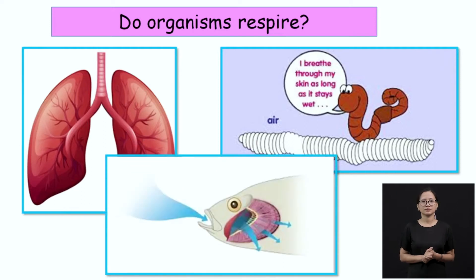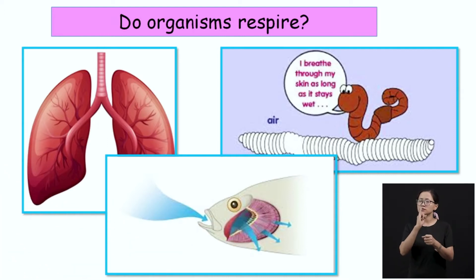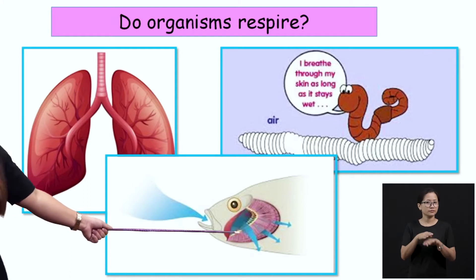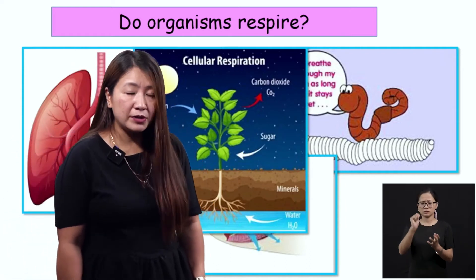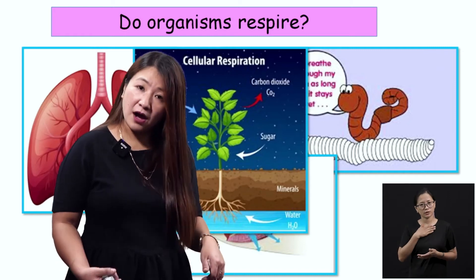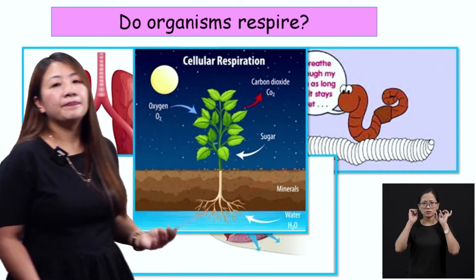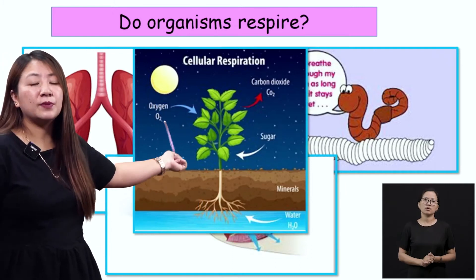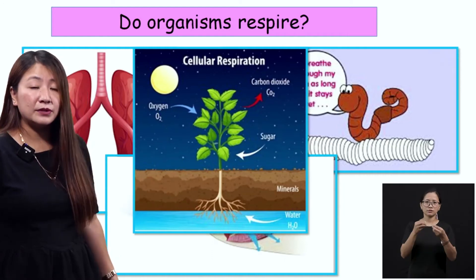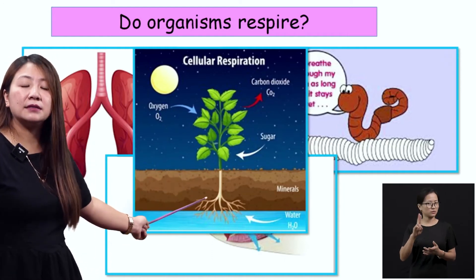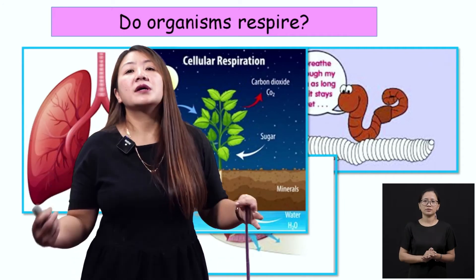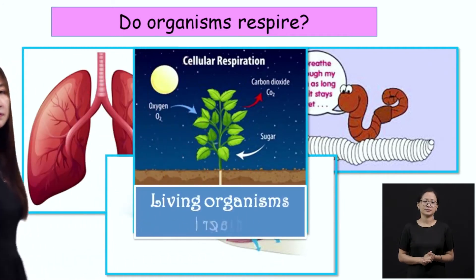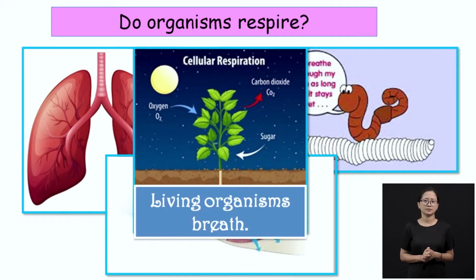Fishes respire through their gills — just the other day we talked about the gills. Then what about plants? Plants — do they respire? Do they breathe? They don't have lungs or gills, but they breathe. During night especially, they take in oxygen and give out carbon dioxide. This is the cellular respiration of plants. So plants also respire — that means living organisms breathe.